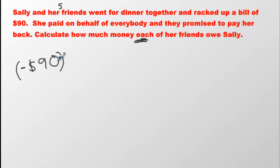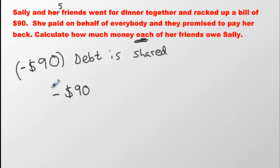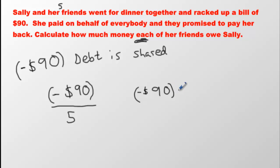This isn't going to be one person paying it back — it's going to be split up. This debt is going to be a shared debt, shared by five people. So we are going to divide it. We're going to go negative $90 divided by five. I wrote it like a fraction — you don't have to; you can write it as negative $90 divided by five.